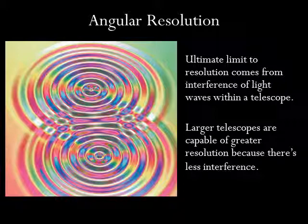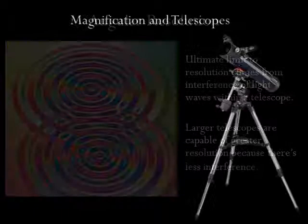The ultimate limit to a telescope's resolving power comes from the properties of light itself. Because light is an electromagnetic wave, beams of light can interfere with one another like overlapping sets of ripples on a pond. This interference limits a telescope's angular resolution even when all other conditions are perfect. This is why even a high-quality telescope in space can never achieve perfect angular resolution.